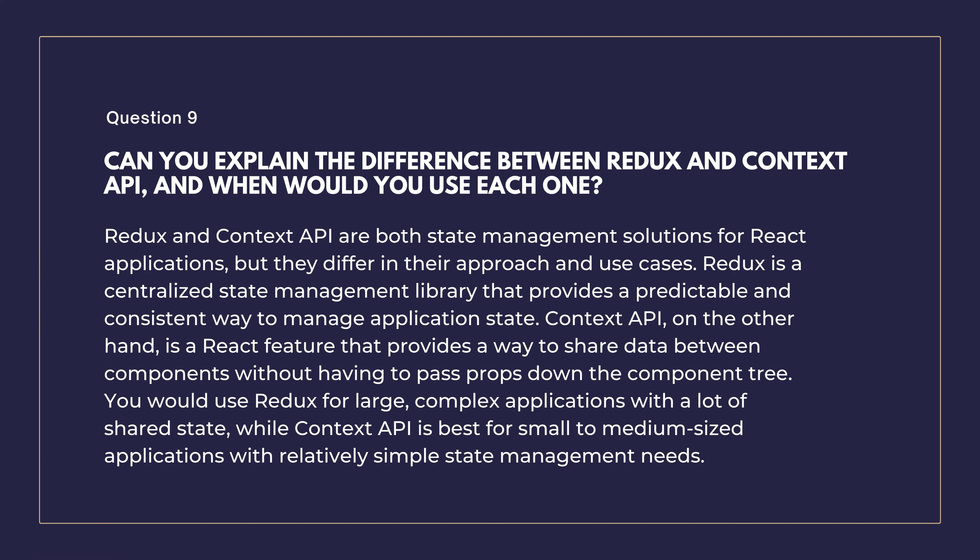Can you explain the difference between Redux and Context API, and when would you use each one? Redux and Context API are both state management solutions for React, but they differ in approach and use cases. Redux is a centralized state management library that provides a predictable and consistent way to manage application state. Context API is a React feature that lets you share data between components without passing props down the component tree. You would use Redux for large, complex applications with a lot of shared state, while Context API is best for small to medium-sized applications with simpler state management needs.